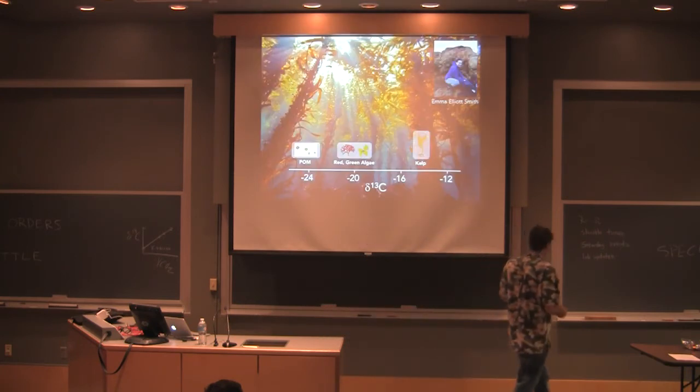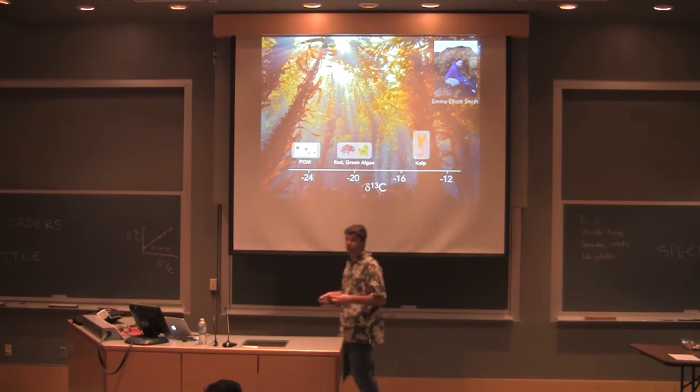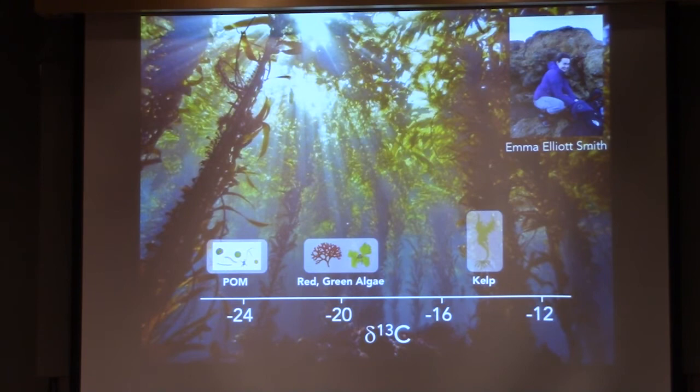But it's cool that we can do this because it means we can reconstruct food webs. This is one of my awesome students, Emma Elliott Smith. She studies kelp forest. You know why she's in New Mexico? How does she study kelp forest? There's these things called jets. You just get on a jet and you get out to California. You get columns, it's great. This particular system, different primary producers have different carbon isotope values.